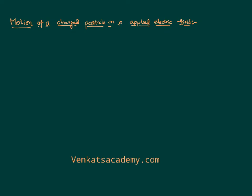Hello everyone. Today in this video lesson we would like to talk about motion of a charged particle in an electric field. Let us consider a charged particle having a charge plus q, moving initially with a velocity u in the horizontal direction. Let us say we have applied an electric field in the vertically upward direction.